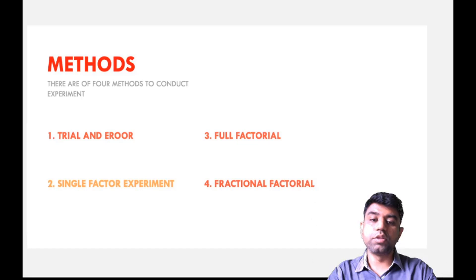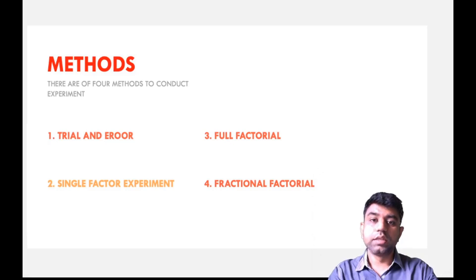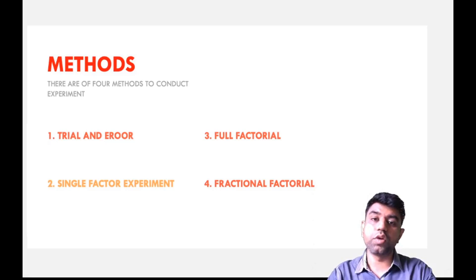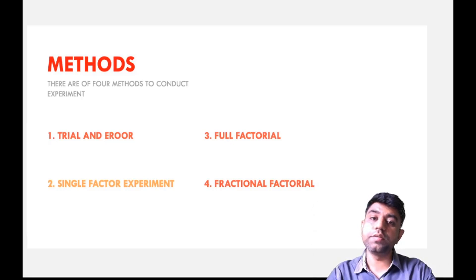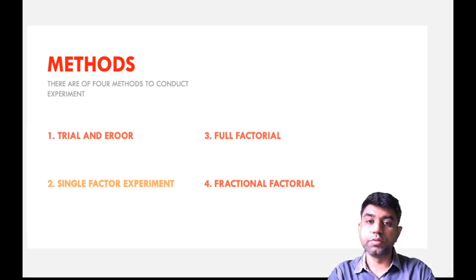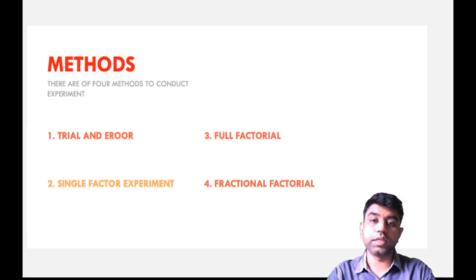Now we are going to talk about the full factorial and the fractional factorial method, but before that let me summarize the earlier class. The trial and error method is not recommended because it lacks direction. In a single factor experiment we are checking the influence of only one factor on the output. The problem with the single factor experiment is that you will get to know about the effect of only one input variable on the output, and you will not be able to know the effect of other variables. In such a scenario, the remaining two methods — full factorial and fractional factorial — prove to be advantageous.